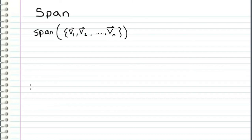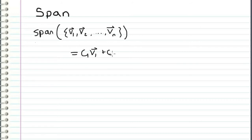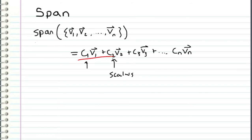Welcome to another video where I'll be discussing span and answering the question: what is the span of a given vector set? We write it as the span of a vector set, and we define it as all of the linear combinations of the vectors within the set. We can write that as c1·v1 + c2·v2 + c3·v3 and so on, where these c coefficients represent scalars. So the span is the set containing all linear combinations — any multiple of any vector added to any multiple of any number of other vectors.